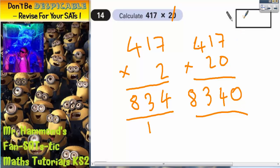So that's what we need to write in the answer box: 8,340. Just to recap, multiplying by 20 is the same as multiplying by 2 but then putting the 0 back on the end because it's 10 times bigger.